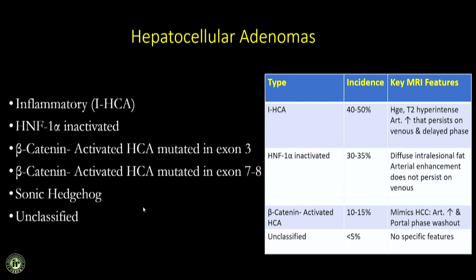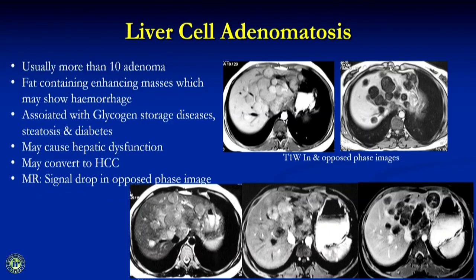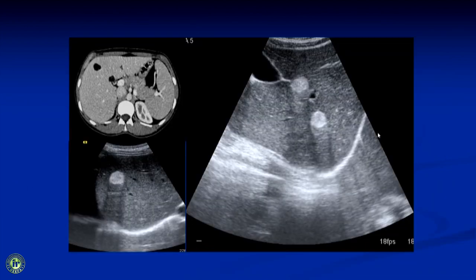Then there are beta-catenin activated adenomas mutated in exon 3 or exon 7 — not much imaging differentiation between these two — and there is a sonic hedgehog type and an unclassified type. To summarize: inflammatory adenomas are more prone to hemorrhage, and HNF1-alpha mutated adenomas show intralesional fat with signal drop on the out-of-phase image. In adenomatosis, look at the very dramatic signal drop on the out-of-phase image when the liver is studded with multiple adenomas.